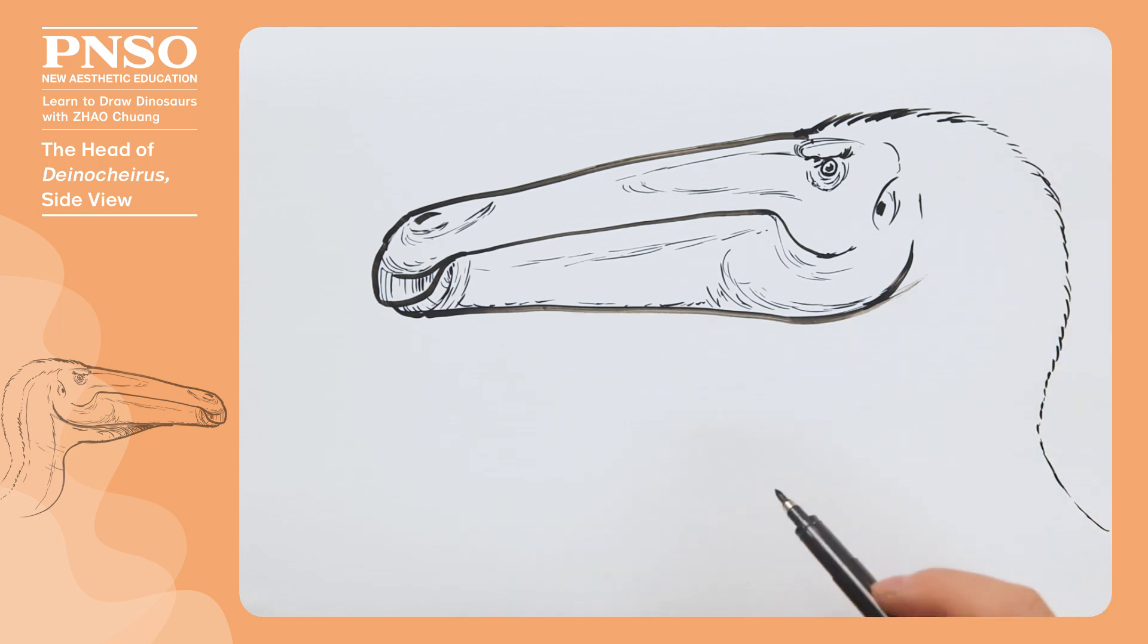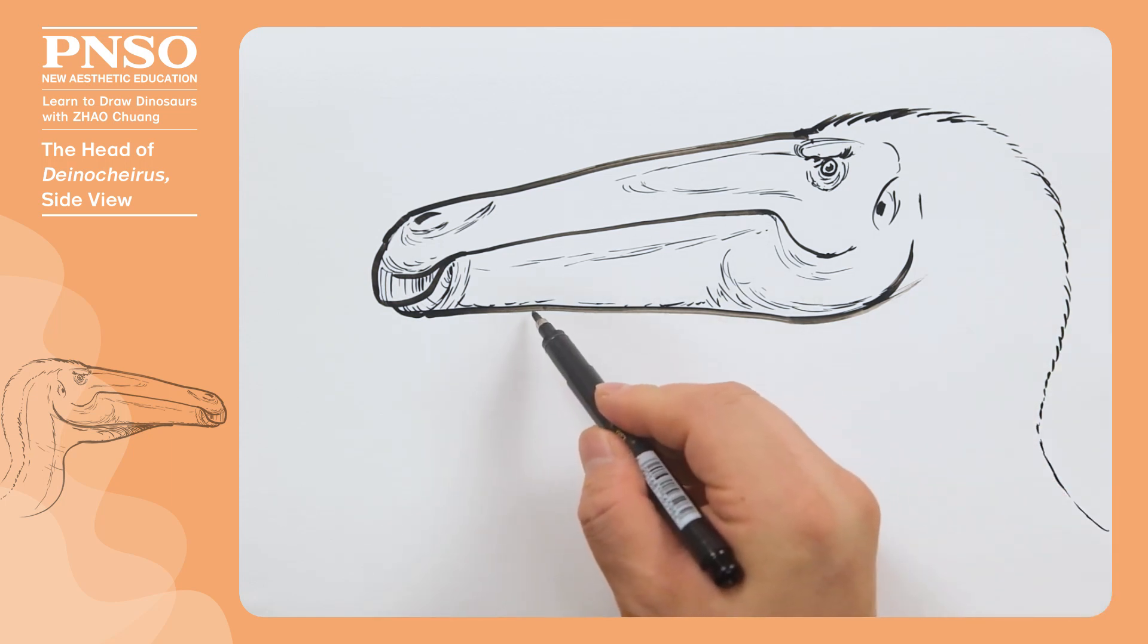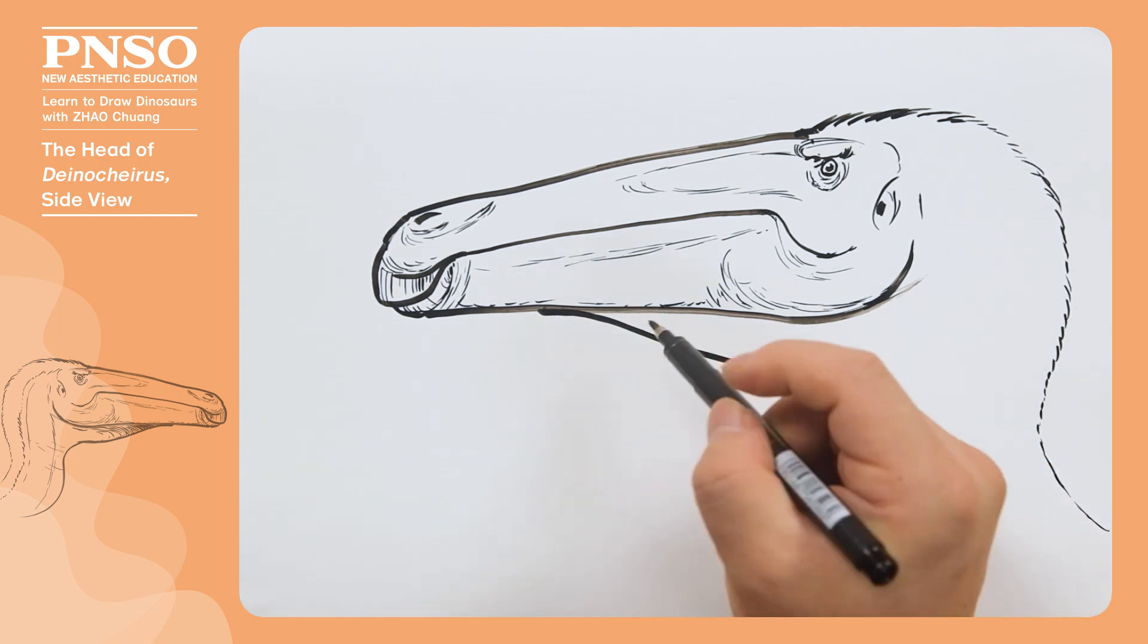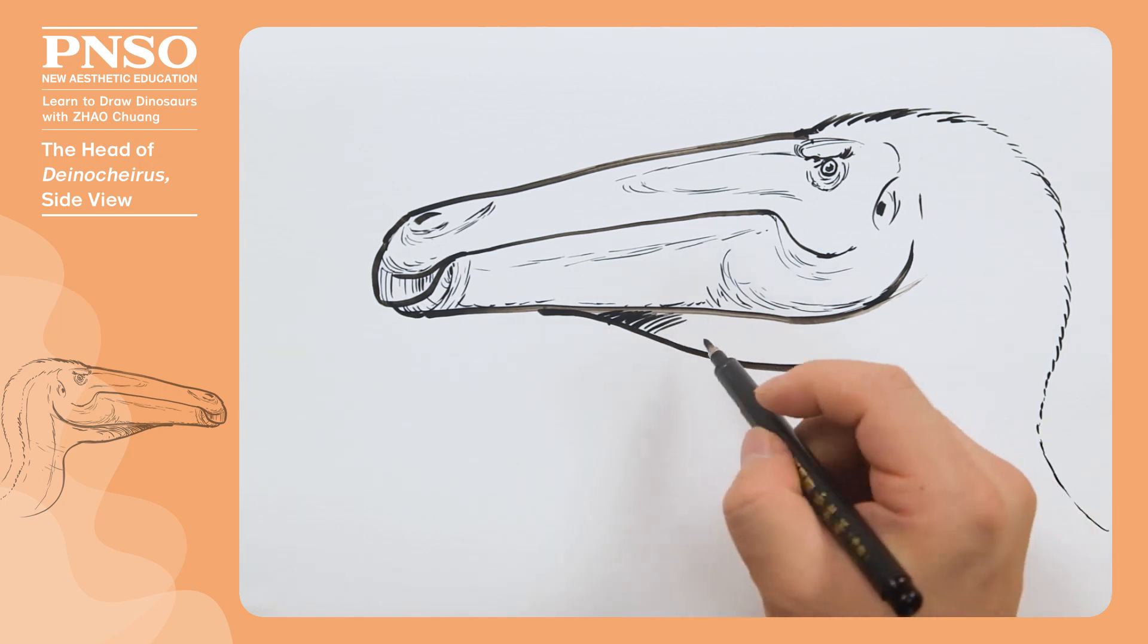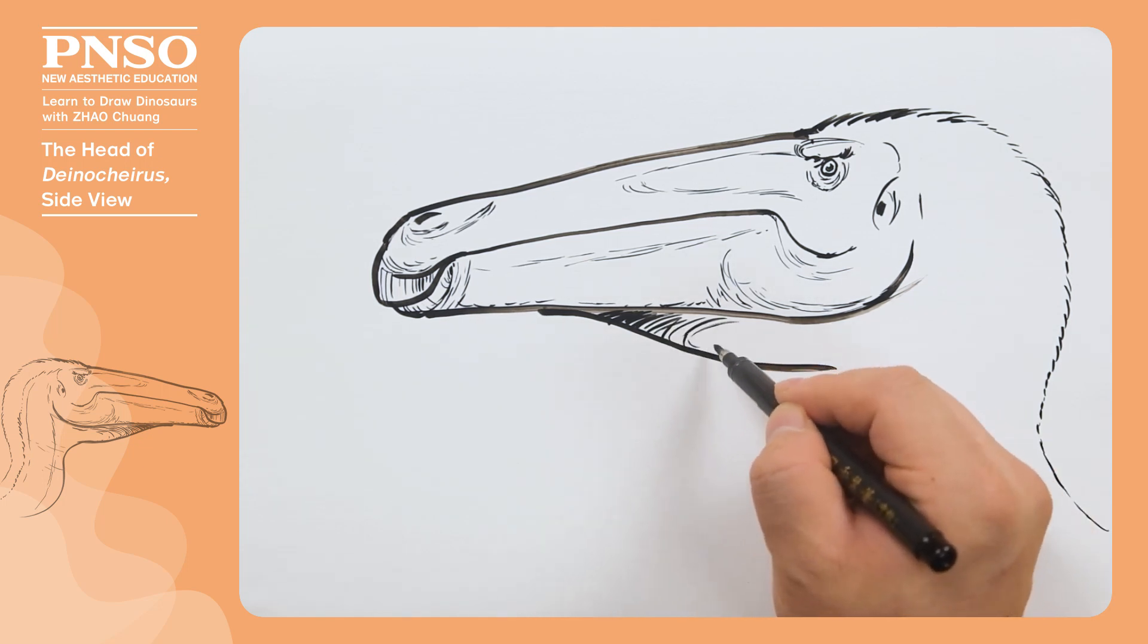The neck was curved. We know it preyed on fish in the water because fish scales were found in its stomach. It was a bit like today's waterfowl, and we draw the throat sac just below its throat.